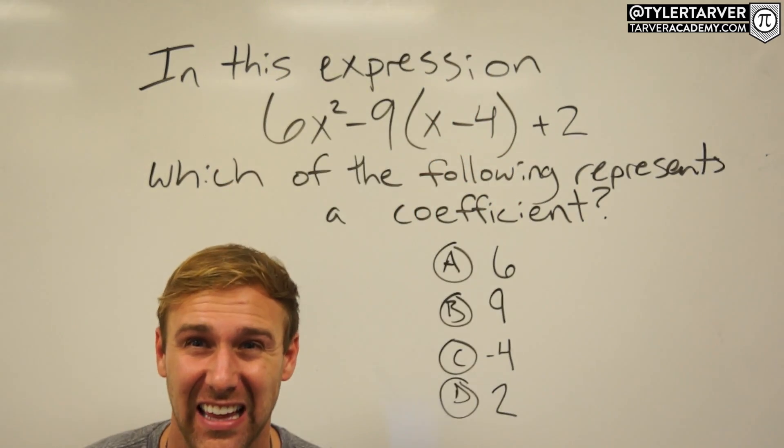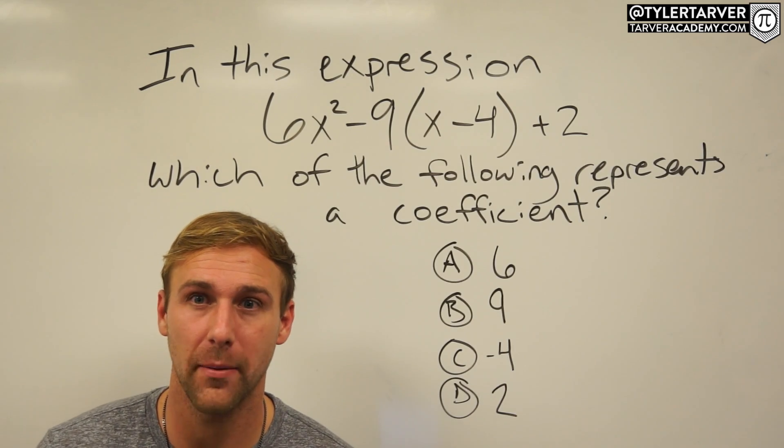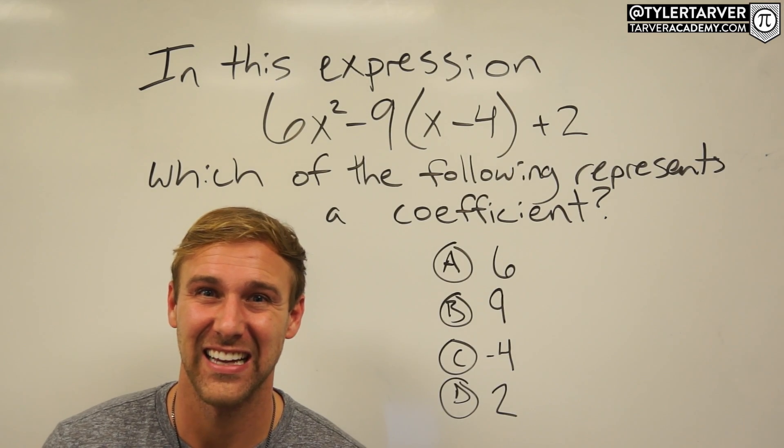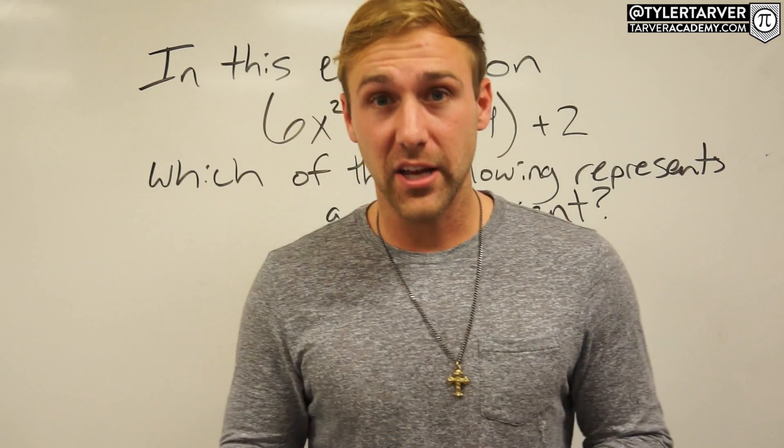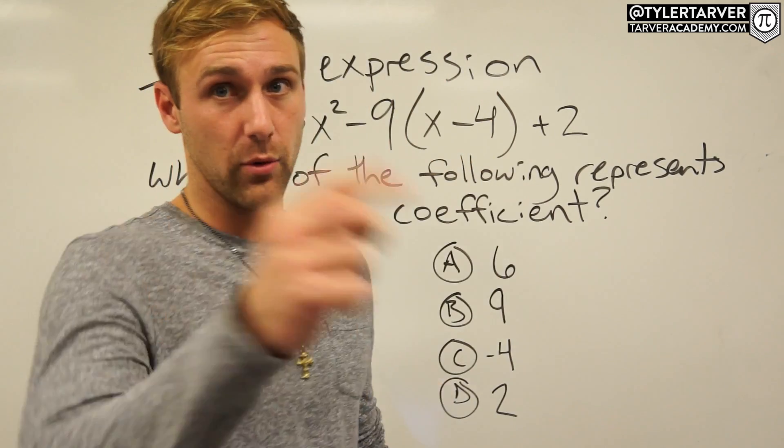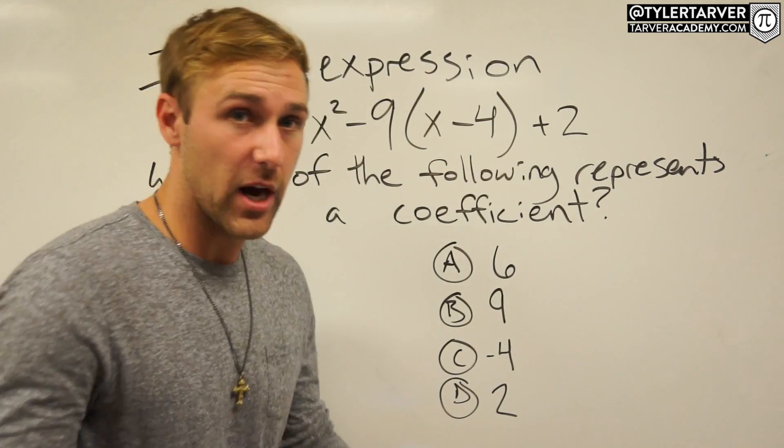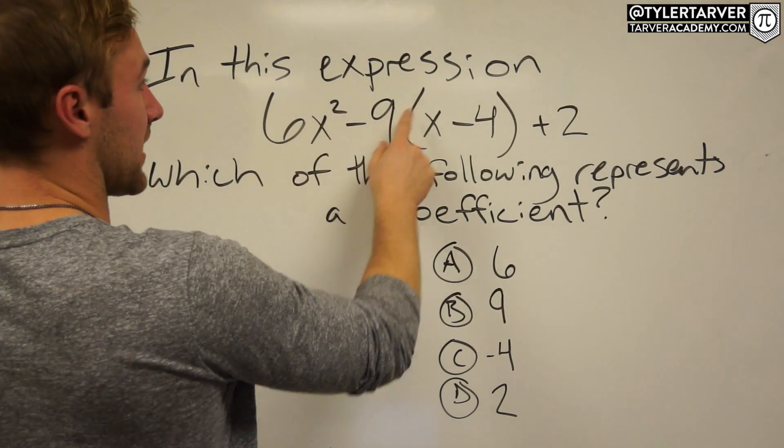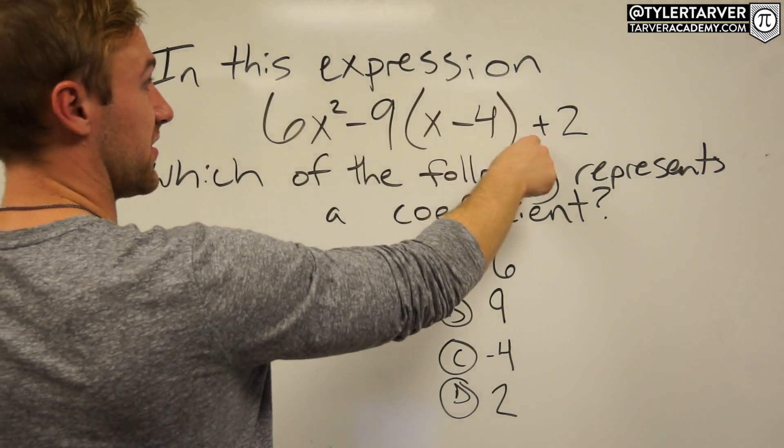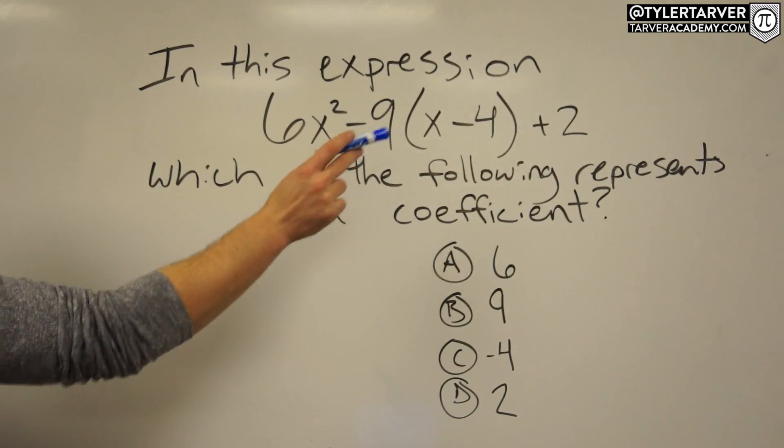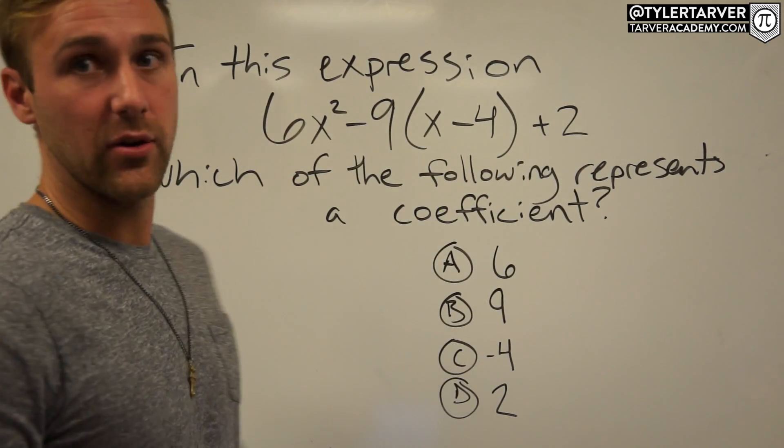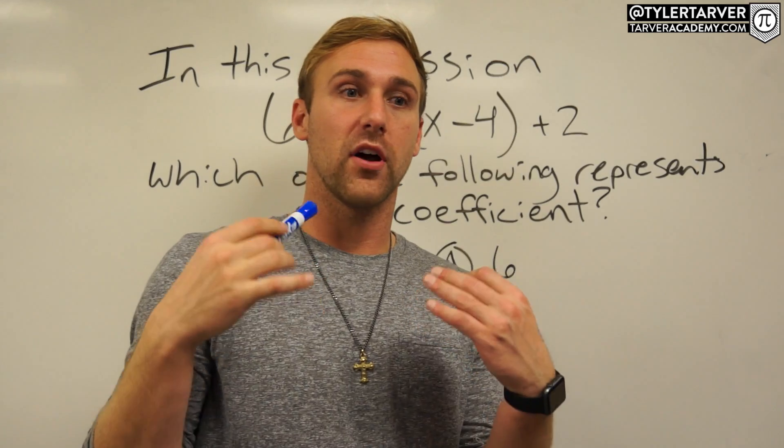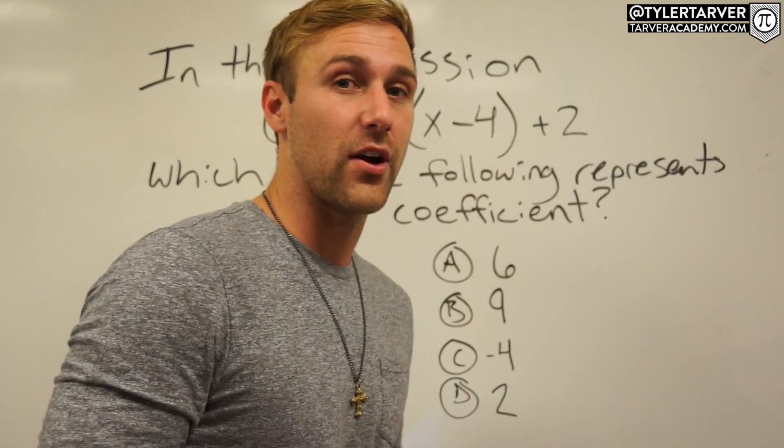Hopefully by now you've frozen and now you better freeze it quick or actually rewind because I'm covering up the problem. Let's read our problem: In this expression 6x squared minus 9 parentheses x minus 4 parentheses plus 2, which of the following represents a coefficient? I'm going to treat this like it's a problem on a test you're taking that way you can figure out some tricks and tips on how to work it and how to find the answer.